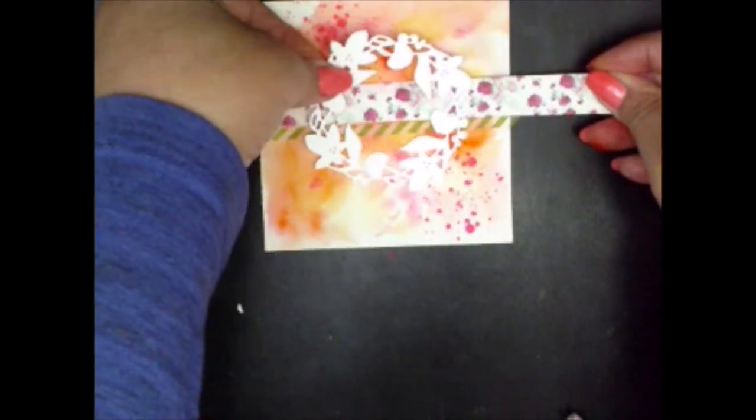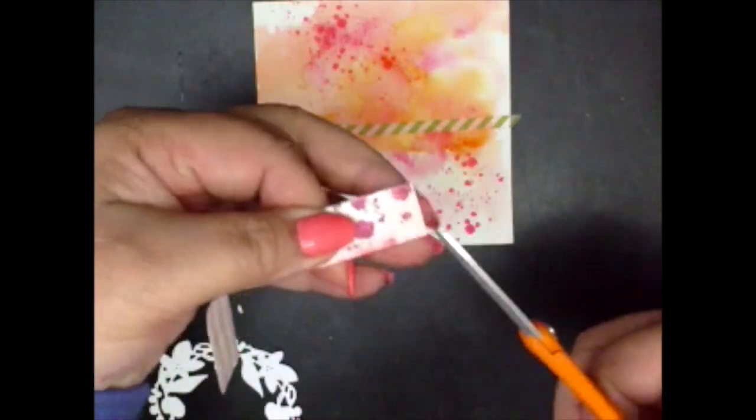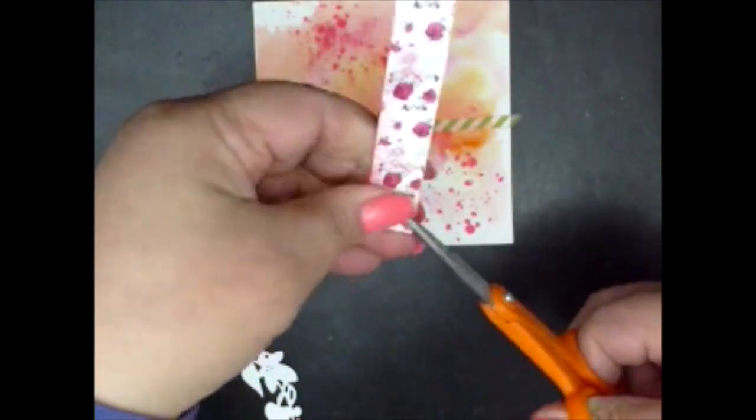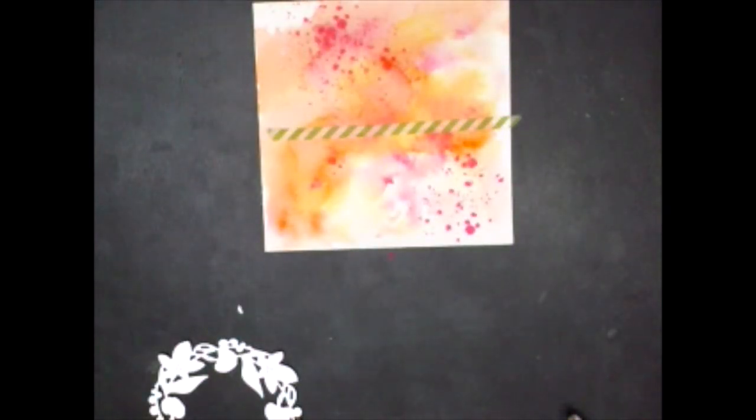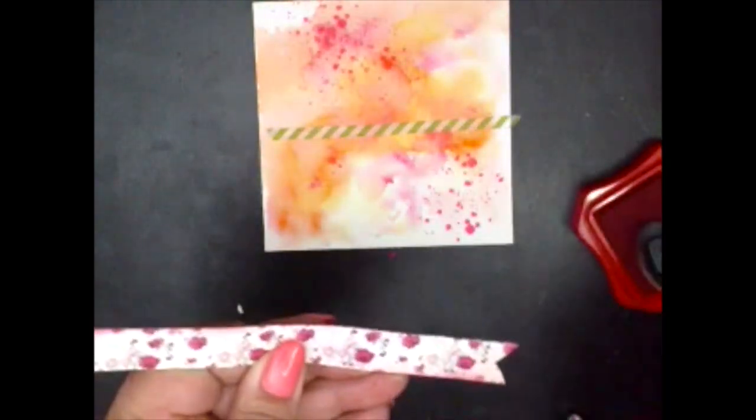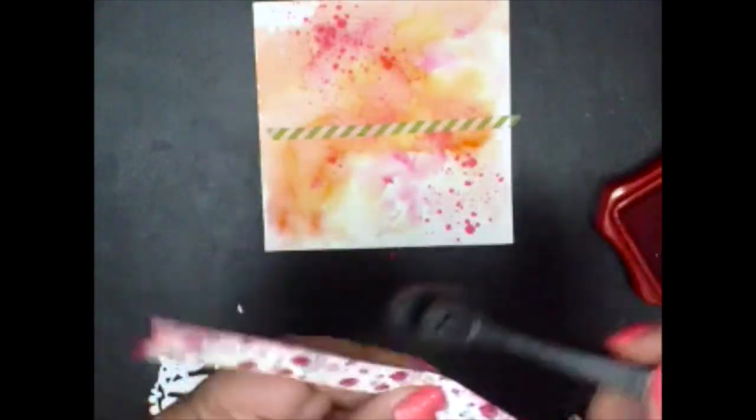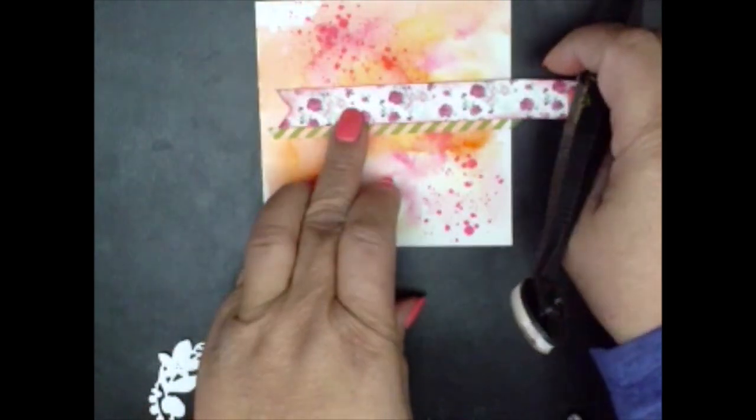And this stripe of patterned paper, which is all I have left of the current favorite paper. I'll just trim it into a little flag. And it has a bit of shading on one edge. So I'll just use my stylus sponge to apply color to the rest of the edges.